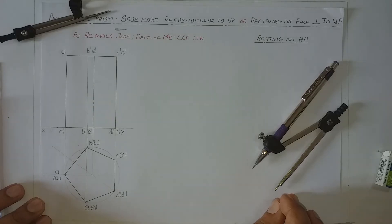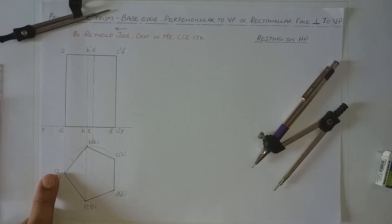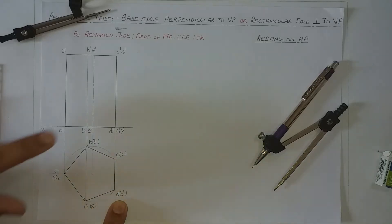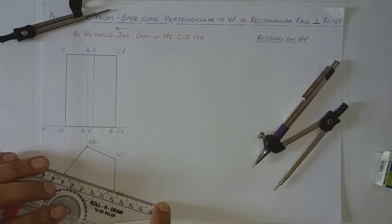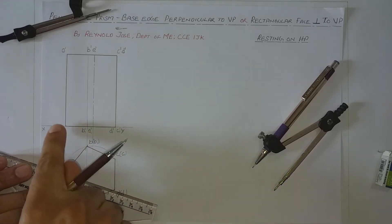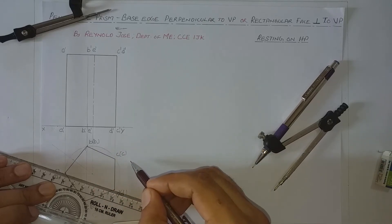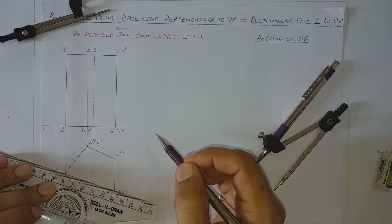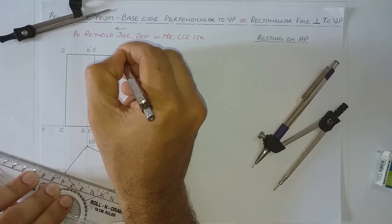Now let us discuss which points are invisible in the front view using the top view. On the extreme left of the top view we have A, and on the extreme right we have D, D1 and C, C1. Consider a straight line connecting A and D. Between this assumed line and the XY line we have points C, C1 and B, B1 — so these four points may be invisible in the front view. Taking them one by one: C and C1 will be invisible in the front view, shown in brackets, because they are on the rear side. When observing from the front, D and D1 are on the front side while C and C1 are on the rear side — that is why C and C1 are invisible.